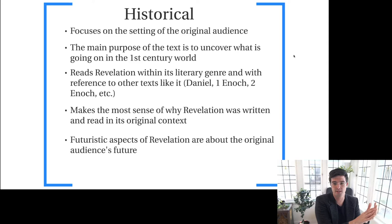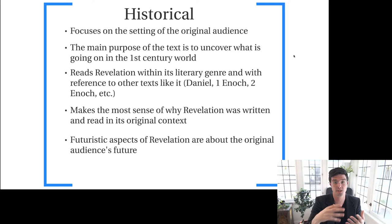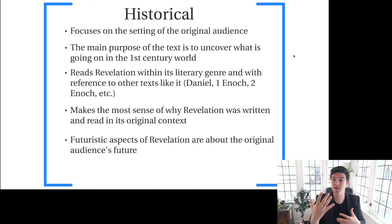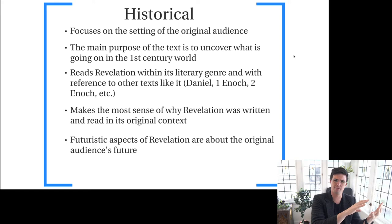The main purpose of the historical approach is to really think about what's going on in the first-century world — what situation is John addressing when he writes the book of Revelation? This reads Revelation within the literary genre of apocalyptic literature, helping us make sense of what makes Revelation work in its original context. The historical perspective tends to view the futuristic aspects we do find in Revelation as really being about the original audience's future. The critique is that by situating it mostly in the past, you lose some of the theological edge Revelation has for Christians today.